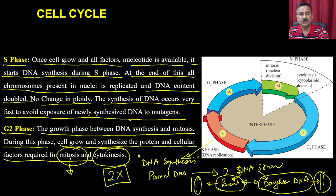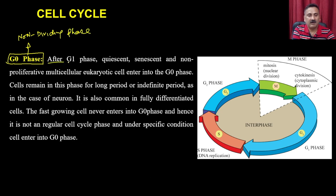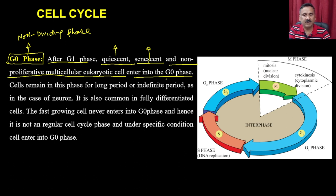Apart from these phases, there is also the G0 phase, which is a non-dividing phase. After the G1 phase, quiescent cells — meaning non-dividing cells — and senescent or non-proliferating multicellular eukaryotic cells enter the G0 phase because they do not want to divide. For example, neural cells.